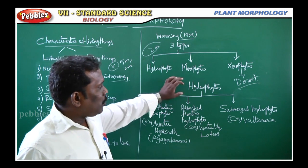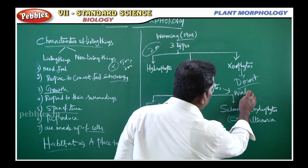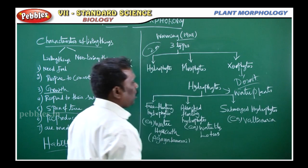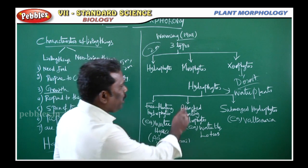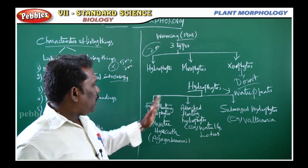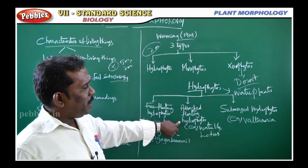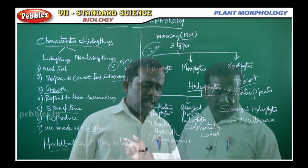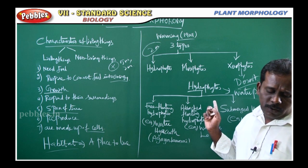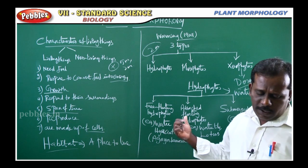Next, we discuss hydrophytes. Hydrophytes means water plants — plants that are always present in water. Hydro means water. These plants live in the water, in the pond, lakes and rivers.